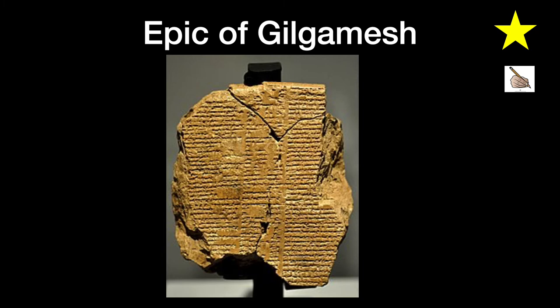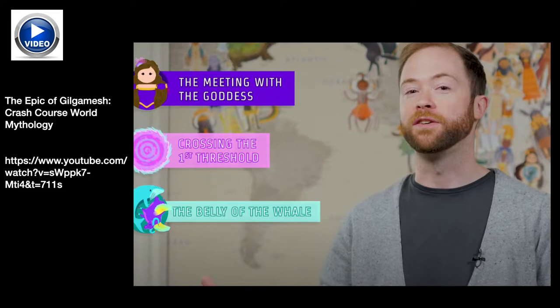The Epic of Gilgamesh is often referred to as the earliest great work of literature that has survived into the modern age. It is more than 4,000 years old. Gilgamesh is a king of Uruk and slayer of the monster Huwawa. To get the full story, here's a Crash Course World History Mythology video for you to watch.